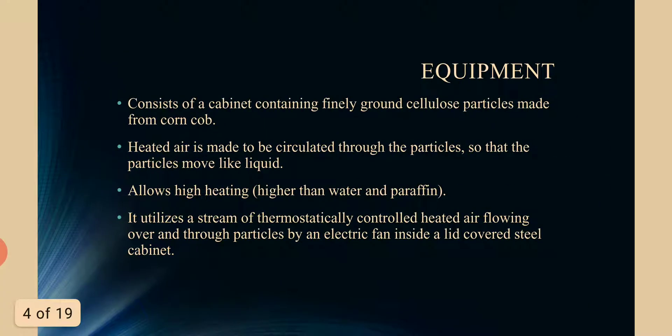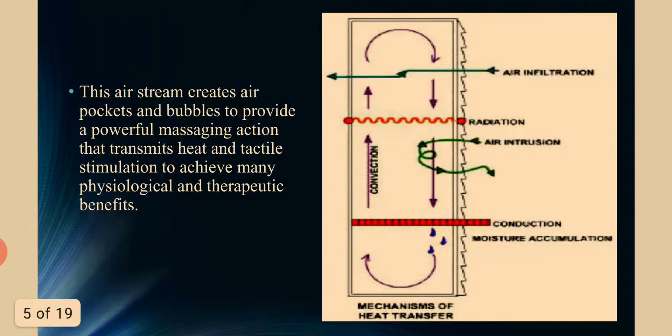The equipment consists of a cabinet containing finely ground cellulose particles made from corn cob. Heated air is circulated through the particles so that the particles move like liquid, allowing higher heating than water and paraffin. It utilizes a stream of thermostatically controlled heated air flowing over and through particles by an electric fan inside a lid-covered steel cabinet. This air stream creates air pockets and bubbles to provide a powerful massaging action that transmits heat and tactile stimulation to achieve many physiological and therapeutic benefits.